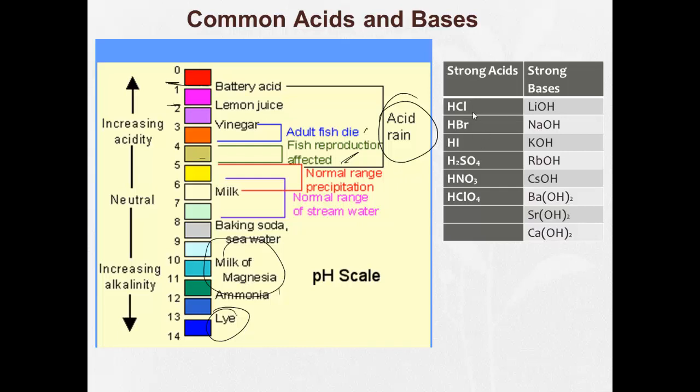Very strong acids: hydrochloric acid, hydrobromic acid, hydroiodic acid, sulfuric acid, nitric acid, perchloric acid, very acidic. Strong bases: pretty much your group 1 and group 2 element with hydroxides are going to be your strong bases.